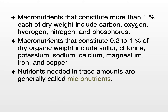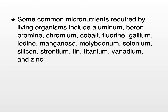Nutrients that are needed by organisms in just trace amounts are called micronutrients. Some common micronutrients found in the bodies of living organisms include aluminum, boron, bromine, chromium, cobalt, fluorine, gallium, iodine, manganese, molybdenum, selenium, silicon, strontium, tin, titanium, vanadium, and zinc.